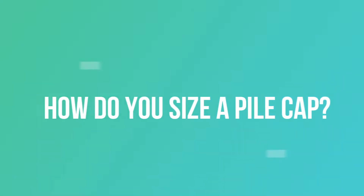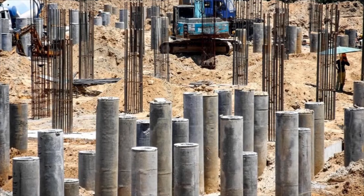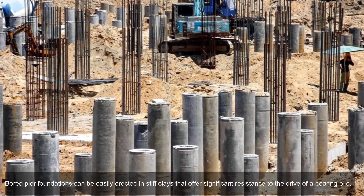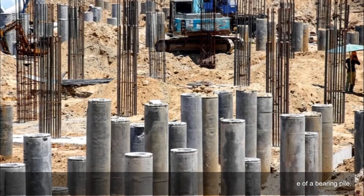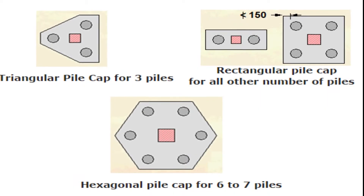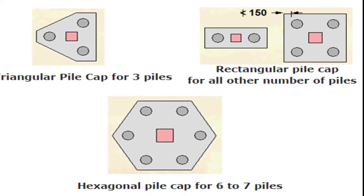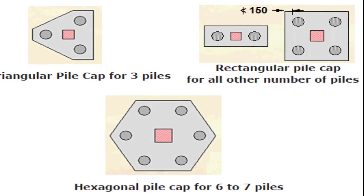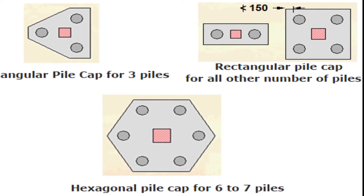The number of piles required to support the weight determines the plan dimensions of a pile cap: hexagonal for six to seven piles, triangular for three piles, and rectangular for more than seven piles.